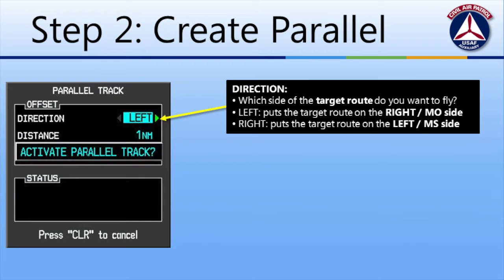Hit enter. This will bring up the menu for creating a parallel track. We have to answer two questions. First, we have to decide whether we want to fly to the left or to the right of the missing aircraft's track. If we fly on the left side, it'll be on the mission observer's side. If we fly it to the right of the missing aircraft's track, the mission scanner will be looking at the actual track. Note the green arrow.